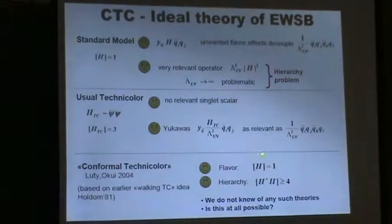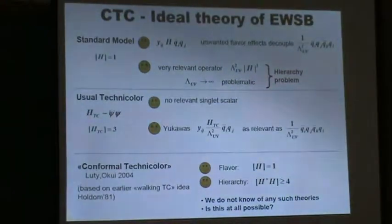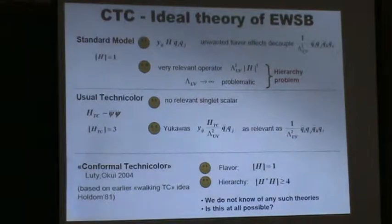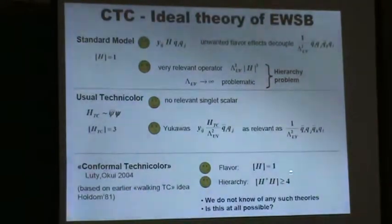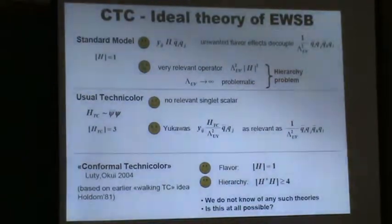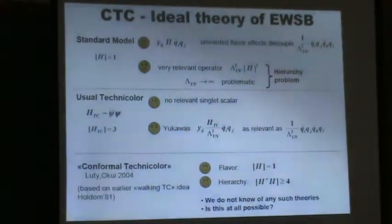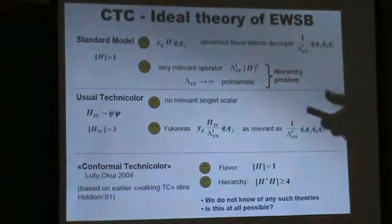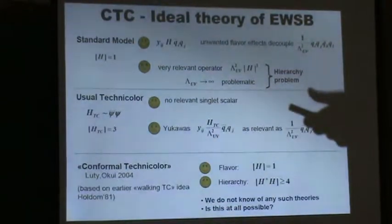To resolve this tension, conformal technicolor — based on an earlier walking technicolor idea — proposes the following: if you want a theory good for flavor physics, the dimension of H should be close to one, making the Yukawa couplings almost dimensionless. On the other hand, if you want to solve the hierarchy problem, the dimension of H†H should be close to four or above four, which eliminates the hierarchy problem. The question then is: is it possible to have a small anomalous dimension for H and a large anomalous dimension for H†H simultaneously?